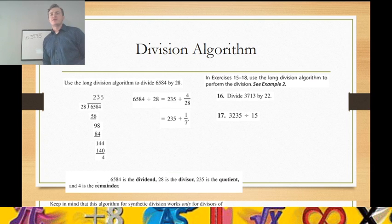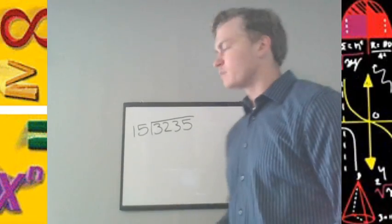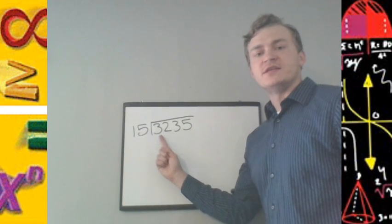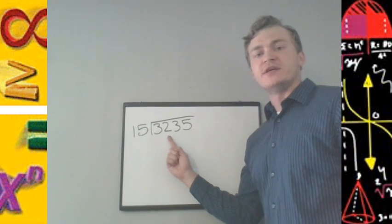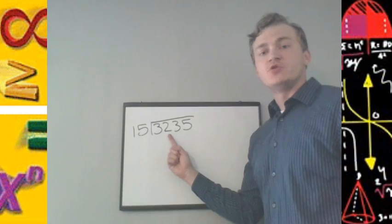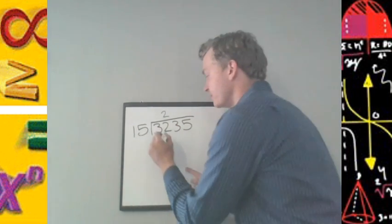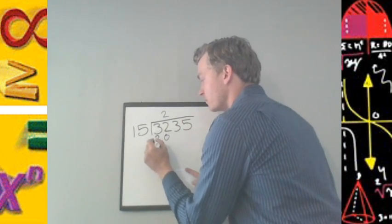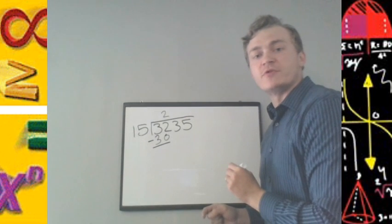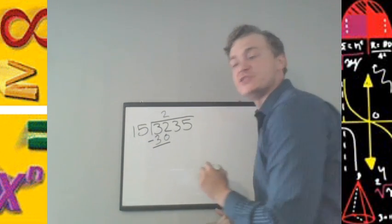3,235 divided by 15. Use the long division algorithm to perform the division. 15 does not divide into 3, but it does divide into 32 twice. 2 times 15 is 30. We subtract to find the remainder. 32 minus 30 is 2.